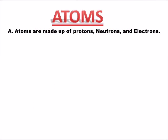Atoms are made up of protons, neutrons, and electrons. It's also important to note that those protons, neutrons, and electrons are made up of even smaller particles called quarks, but we're going to talk specifically about protons, neutrons, and electrons.